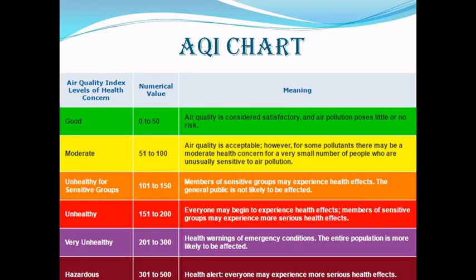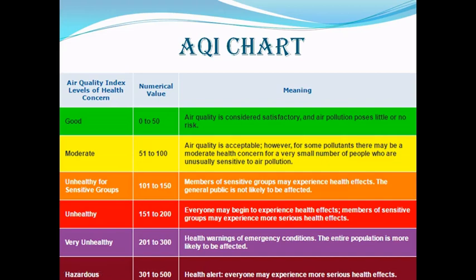The AQI chart comprises six major categories. We have various levels of concern: Good, Moderate, Unhealthy for Sensitive Groups, Unhealthy, Very Unhealthy, and Hazardous. If the calculated AQI lies between 0 to 50, it is Good. The AQI of 114 that we calculated lies between 101 to 150, which is Unhealthy for Sensitive People, and has various health effects on the general public.